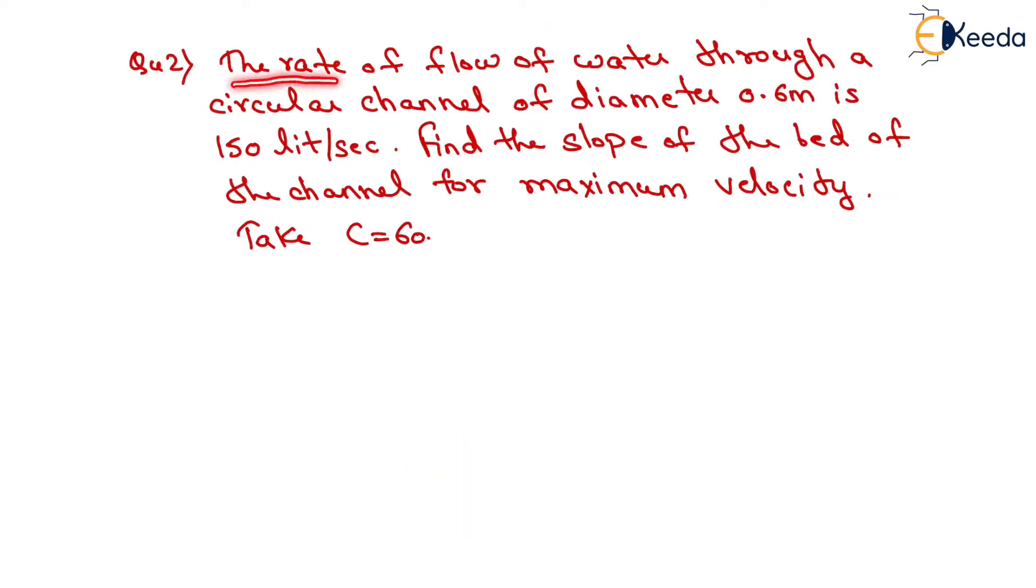Question is given as the rate of flow of water through a circular channel of diameter 0.6 meter is 150 liter per second. Find the slope of the bed of the channel for maximum velocity, take Chigi's constant C equals to 60.